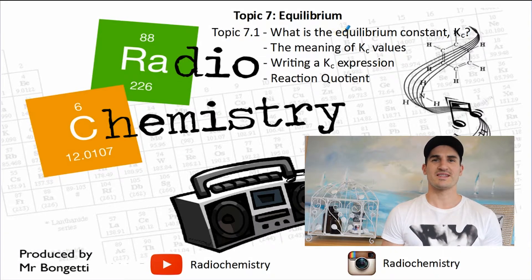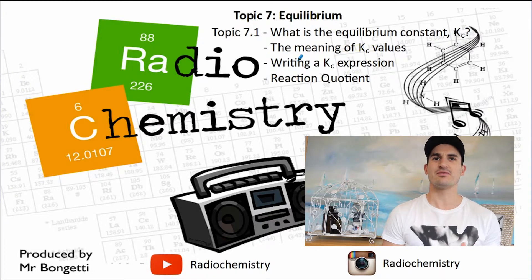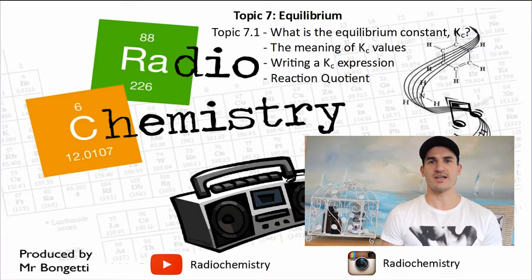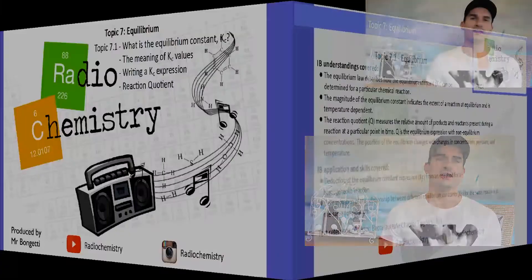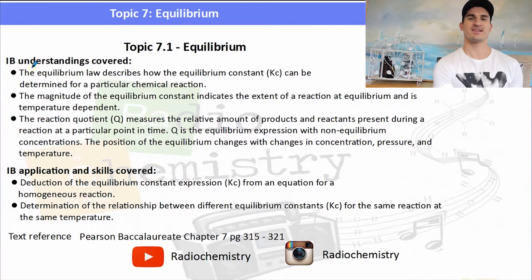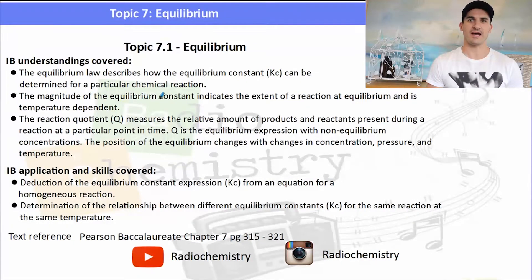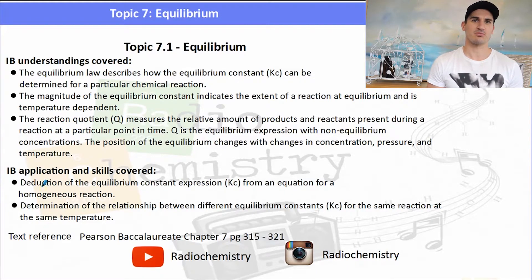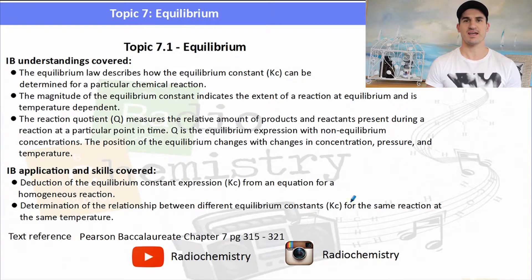Topic 7.1 — what is the equilibrium constant Kc? We look at the meaning of Kc values, we learn how to write a Kc expression, and then we talk about the reaction quotient. The IB understandings focus around this equilibrium law and this Kc value, and we need to talk about reaction quotient and how that fits in with the Kc value. We might be asked to write the Kc expression, and then determine the relationship between Kc and the reaction quotient.